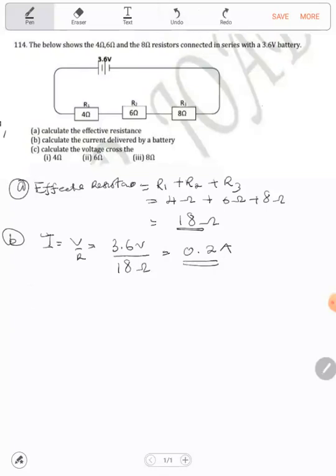Part C says calculate the voltage across the 4 ohm resistor. We know that V = I × R. Something we need to know about resistors in series is that they have the same current. So the same current of 0.2A flows through all resistors.